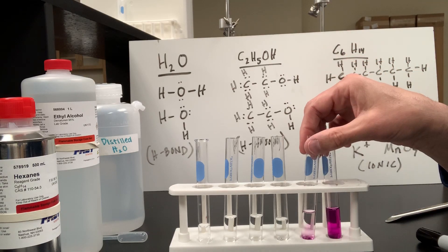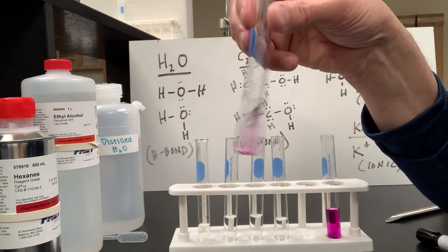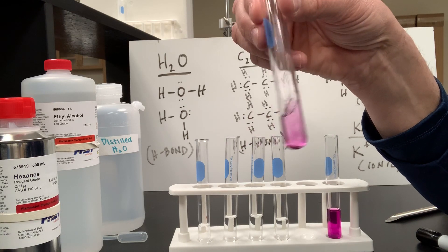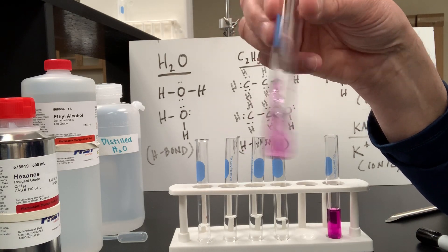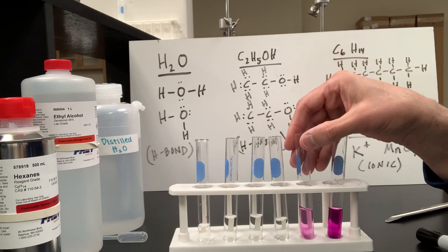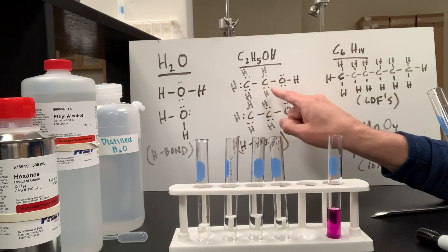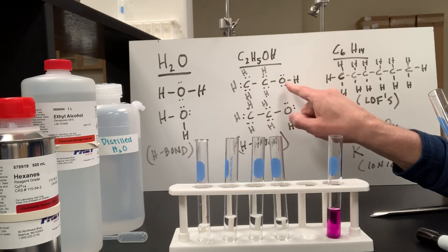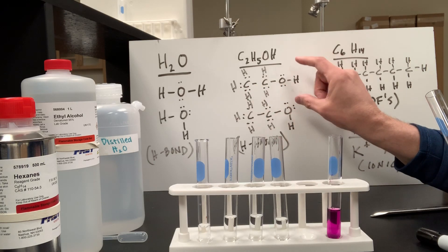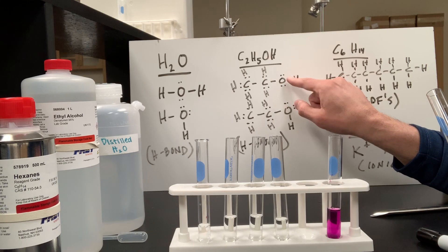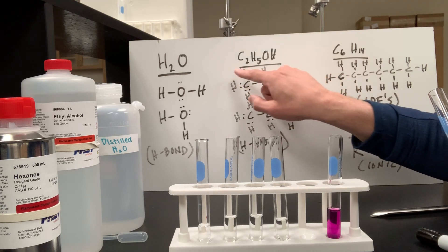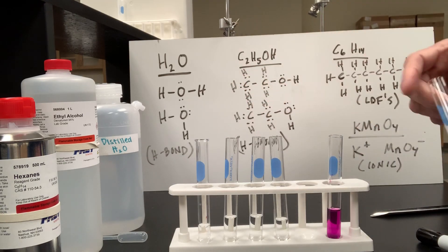Now, what about ethanol and potassium permanganate? Well, the potassium permanganate certainly does dissolve in the ethanol, but not quite as well as it did in the water. And that probably has to do with this end of the ethanol molecule being nonpolar, but this end can hydrogen bond. So we have some positive and negative aspects to this molecule, as well as some nonpolar aspects to this molecule.